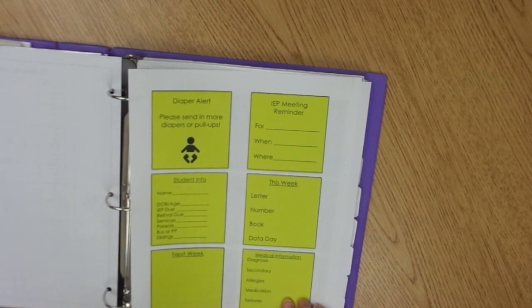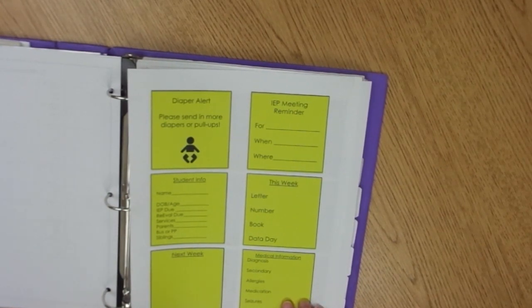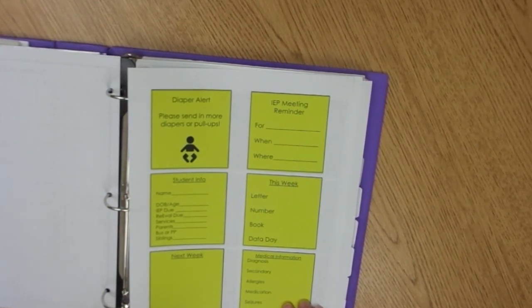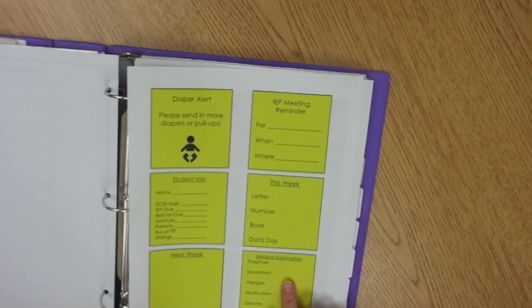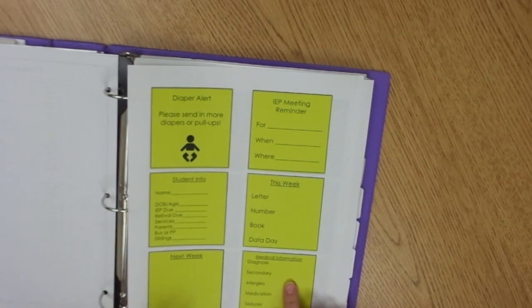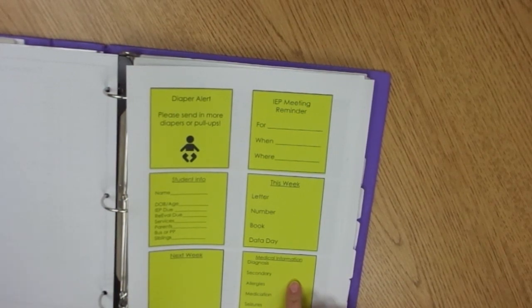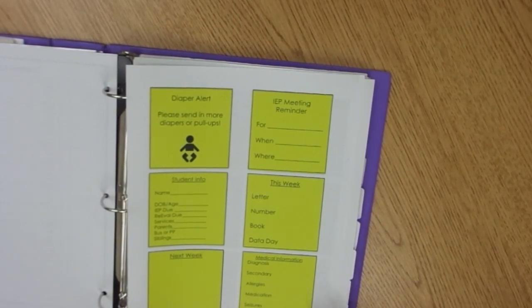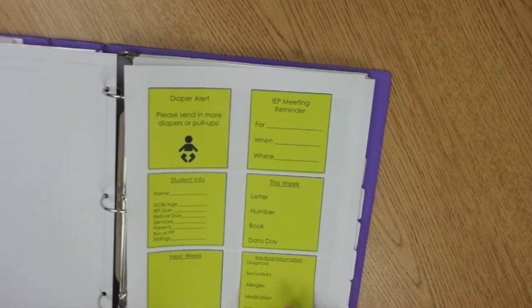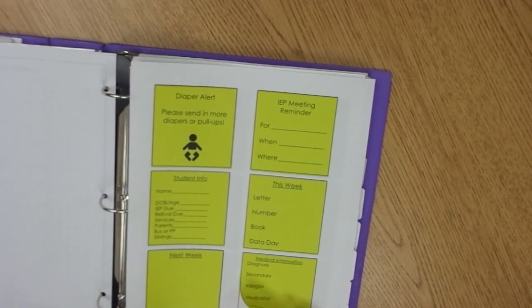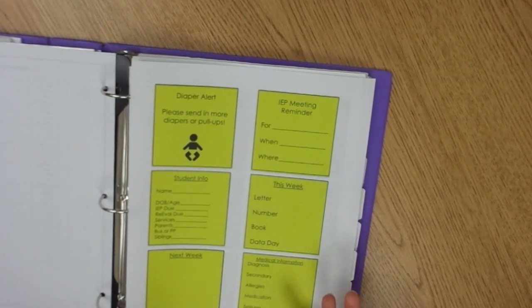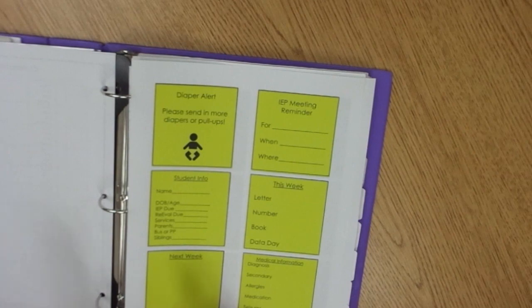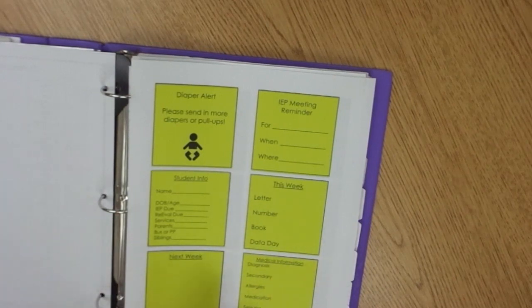And the last thing that I have here is just medical information. And these are for students who typically have severe health impairments. I have a few students like that now, and this is just good information to have just in case there's an emergency. We have emergency folders for fire drills and other types of emergencies. But this is great because you can just have this information on a sticky note and you can just have it in your emergency bag for when you go to a fire drill if you don't have access to any type of information because it is left in the building.